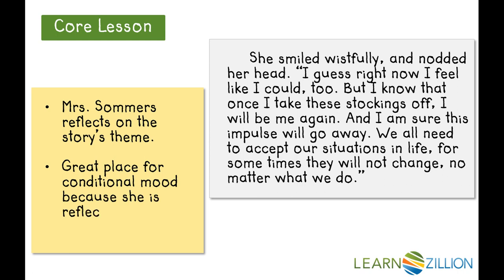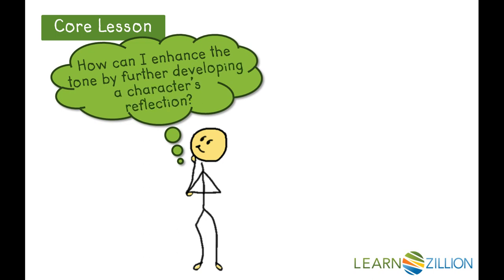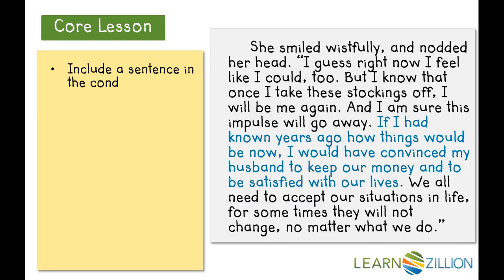Here, Mrs. Summers is really reflecting on her situation in life, and we can tell that she feels a little bit of regret. Now I am asking myself: how can I enhance the tone by further developing a character's reflection? After our close reading, we decided that the story had a melancholy or sad reflective tone. So I can add a conditional mood clause that will help add to this sad reflective tone. I'm thinking about what Mrs. Summers might wish she had done differently — I'm pretty sure she would have kept the money she and her husband had instead of taking a risk trying to get more.